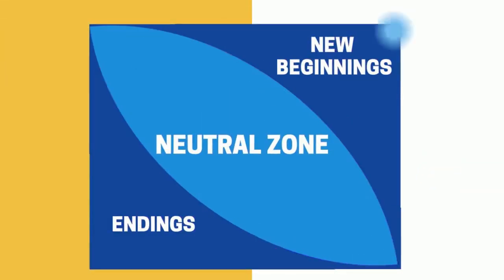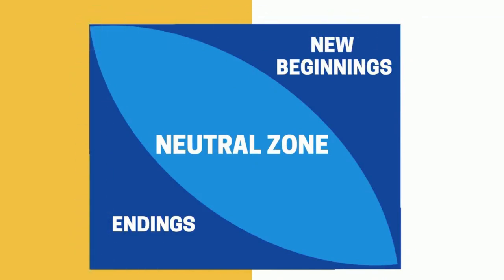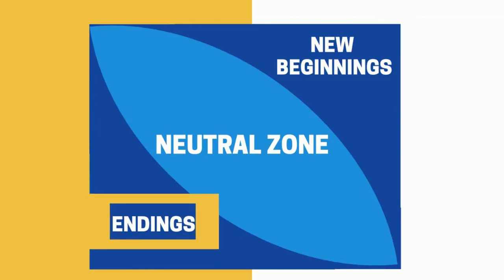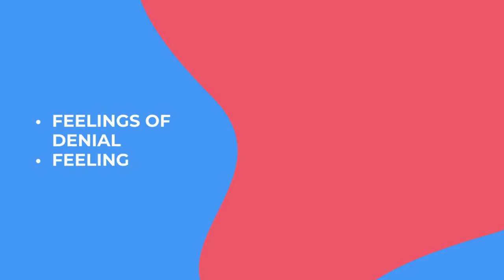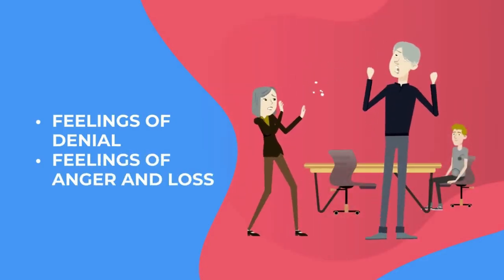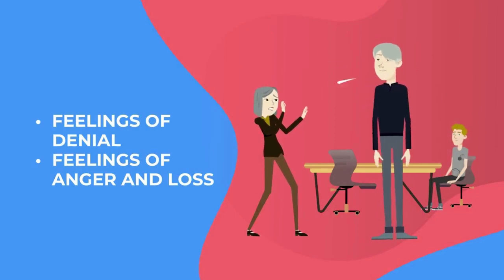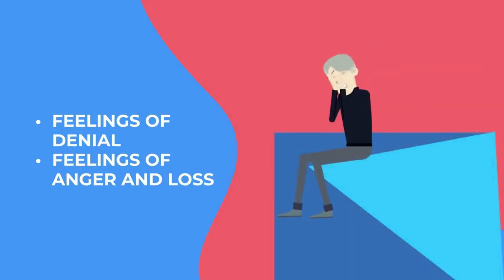The Bridges Model deals with the emotional aspects of change, which is the transition part. Zone 1 is ending, losing, and letting go. The change is introduced in this stage, involving letting go of personal feelings. There can be feelings of denial, a resistance to accepting that things are changing, followed by feelings of anger and loss.